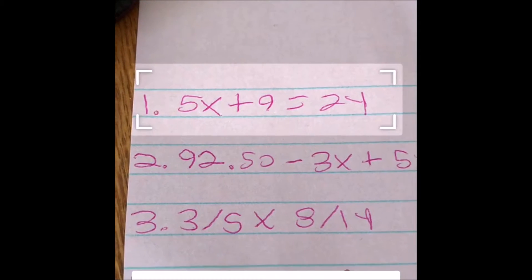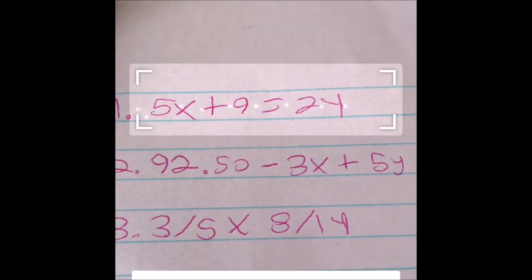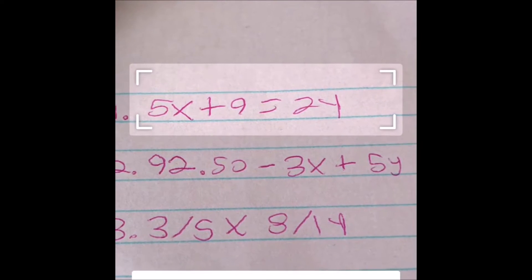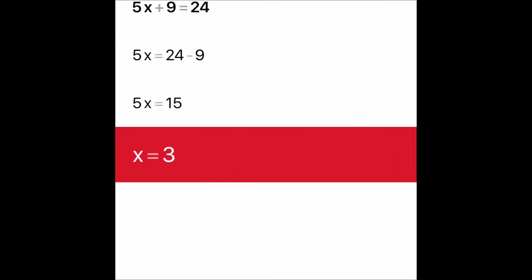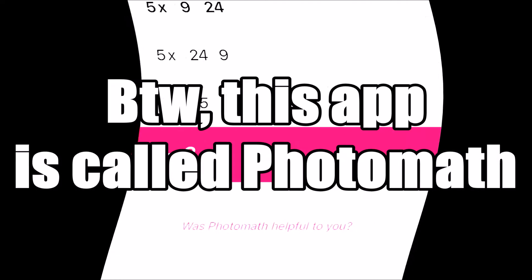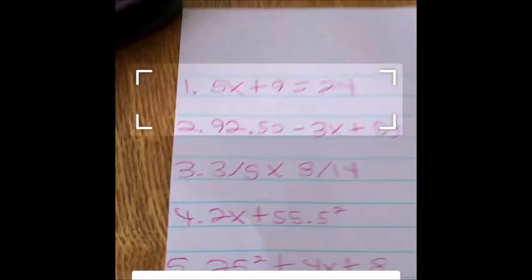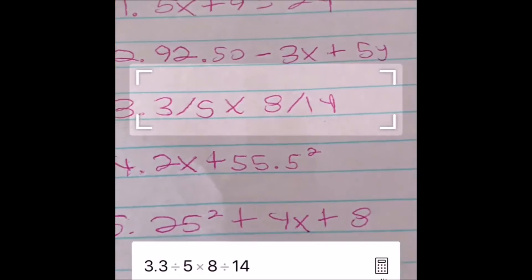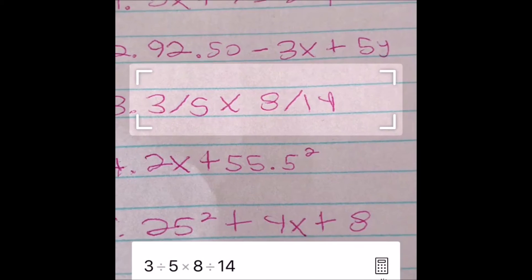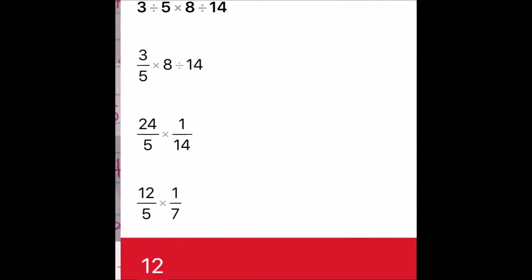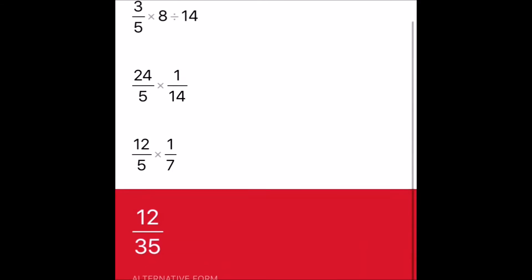Oh my god, look at that. The best thing is it even tells you how to get three, which is amazing. Yes, that is the crap right there. Number three, come on, there we go, 12.35. Look, I like how they show you what to do, that's amazing.